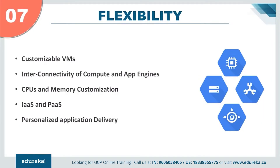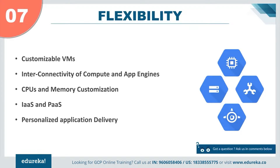At number seven, we have flexibility. Custom machine types is a feature of Google Compute Engine that lets you easily create a machine type customized to your needs. With custom machine types, you can create virtual machines with the optimal amount of CPU and memory required for your workloads — from as little as one virtual CPU to as many as 64 virtual CPUs. With Compute Engine you get infrastructure as a service, and with App Engine you get platform as a service, all under one roof of Google Cloud. The flexibility of Compute Engine and App Engine allows you to create a fully managed, customizable machine that can be scaled up or down according to traffic or requirements, breaking down the barriers between IaaS and PaaS.